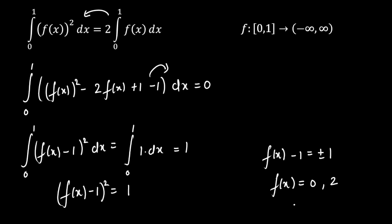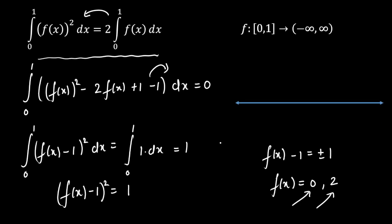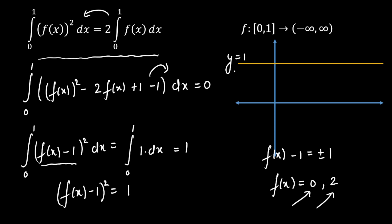There are two types of functions which are possible: f(x) = 0 and f(x) = 2. But in total, the total number of functions satisfying this given condition could be 2 or more than 2. Let me show you graphically. Let us say this is the x-axis and y-axis. I want the area under the curve of (f(x) minus 1) whole square from 0 to 1. Let us say this is y = 1.